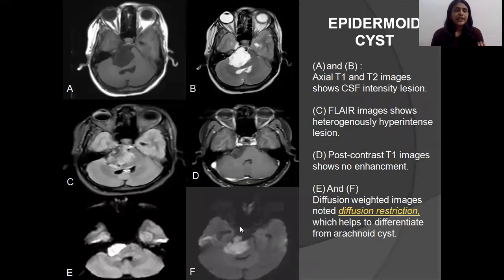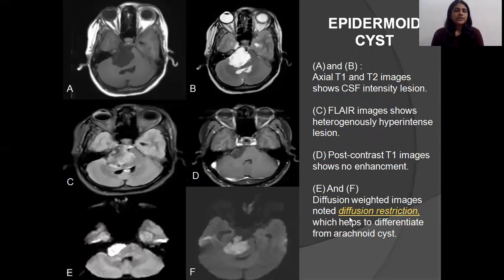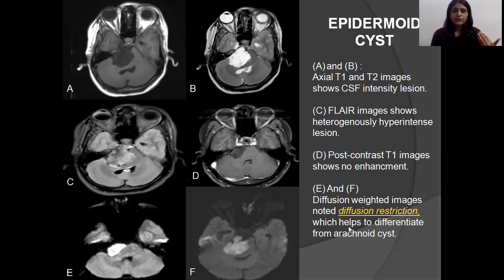Epidermoid cyst is a very rare congenital cystic lesion. It shows CSF intensity on both T1 and T2, but the FLAIR image shows a heterogeneously hyperintense lesion with no post-contrast enhancement, and there is diffusion restriction. This point is very helpful in differentiating between arachnoid cyst and epidermoid cyst, as diffusion restriction is seen in epidermoid cyst.